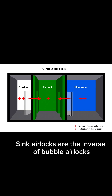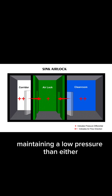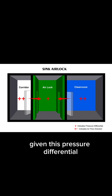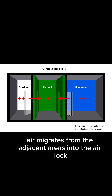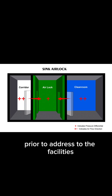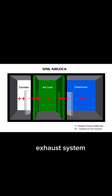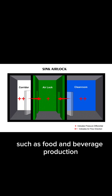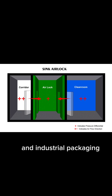Sink airlocks are the inverse of bubble airlocks, maintaining a lower pressure than either of the adjoining rooms. Given this pressure differential, air migrates from the adjacent areas into the airlock prior to egress through the facility's exhaust system. Sink airlocks are commonly used in applications such as food and beverage production and industrial packaging.